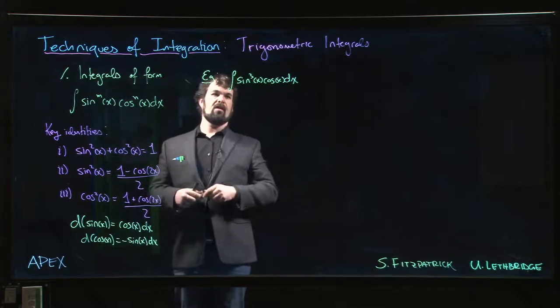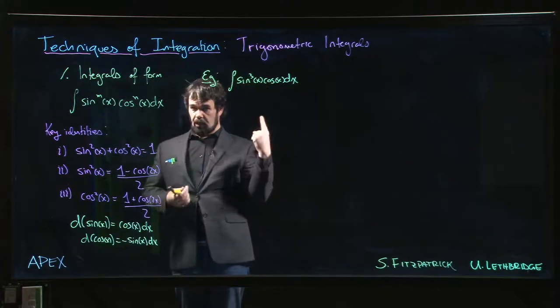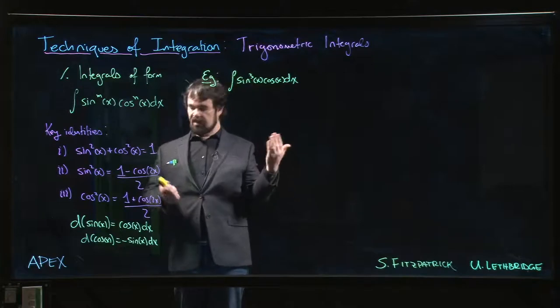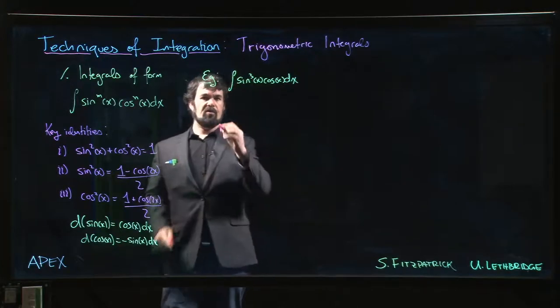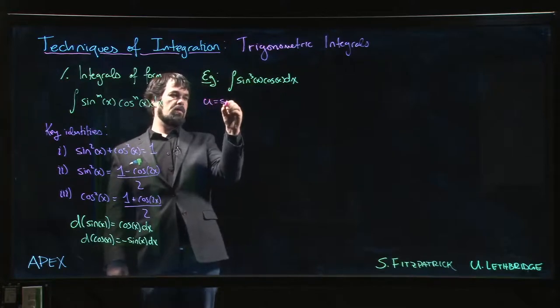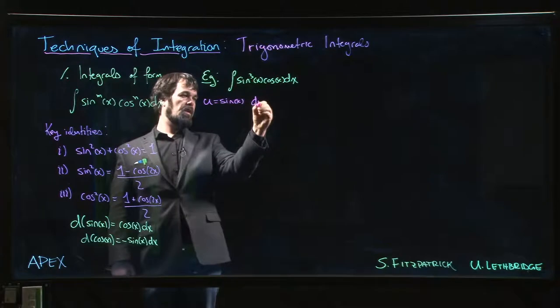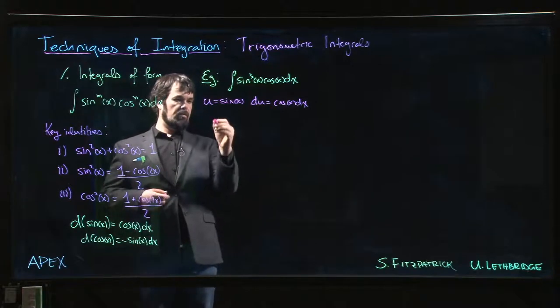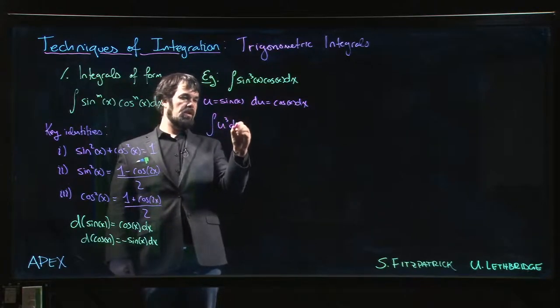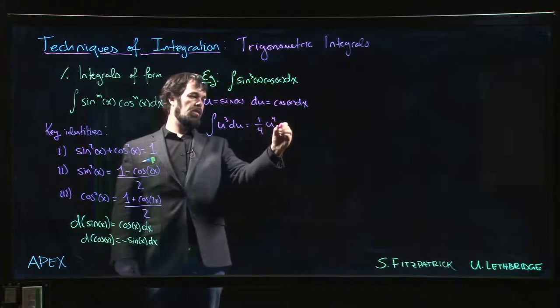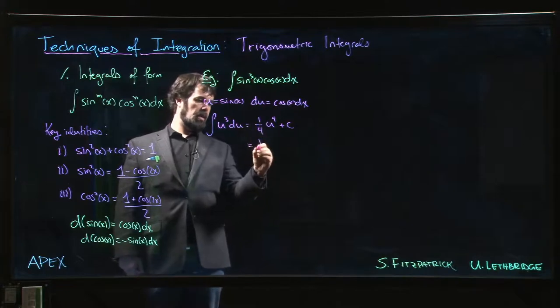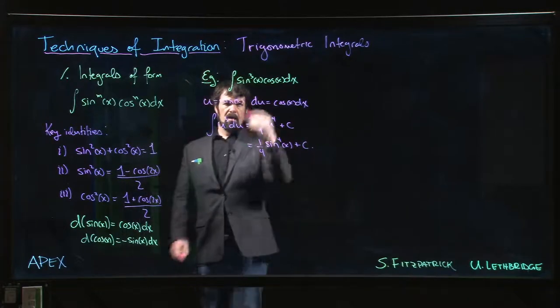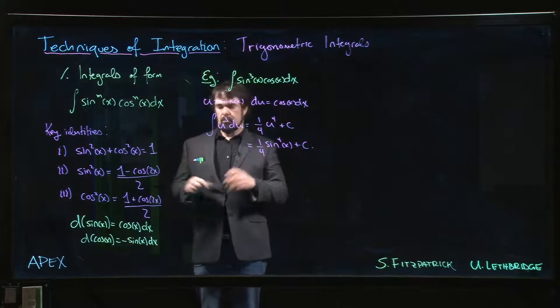So if you have something like this, where cosine shows up just to the first power or sine shows up to the first power, this is a very simple integral by substitution, and in fact it's one that you've probably already done. So if we have something like this, we know that we can just take u to be sine x, and that makes du equal to cos x dx, and so what we get is the integral of u cubed du, and we know that that's simply 1 over 4 u to the 4, and we put back in that u is equal to sine x and we're done. Maybe you can even do that one in your head. It's relatively straightforward.